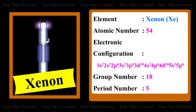For the element xenon, the atomic number is 54. The electronic configuration is 1s² 2s² 2p⁶ 3s² 3p⁶ 3d¹⁰ 4s² 4p⁶ 4d¹⁰ 5s² 5p⁶. The group number is 18 and the period number is 5.